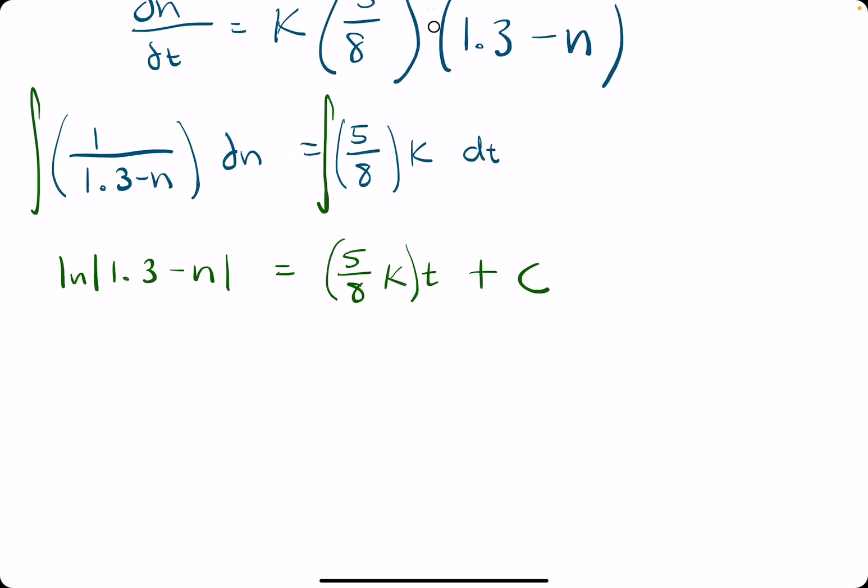And now, what we're going to do is try to isolate n on this left side by making e the base of both sides, giving us 1.3 minus n equals. And I'll go ahead and rewrite it like we have in the past, throwing c out in front, leaving e to the 5 eighths k times t as the exponent.